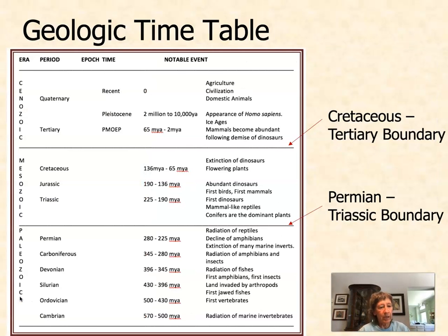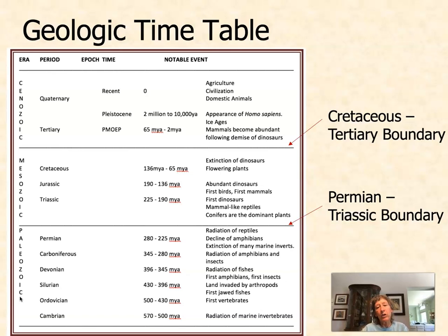The line between the Paleozoic and the Mesozoic is called the Permian-Triassic boundary, which occurred about 225 million years ago. It is associated with a mass extinction event where most species on the planet went extinct. There's another boundary between the Mesozoic and the Cenozoic called the Cretaceous-Tertiary boundary, which occurred about 65 million years ago and is associated with the extinction of the dinosaurs. Those are two mass extinction events I want you to know by name and date.